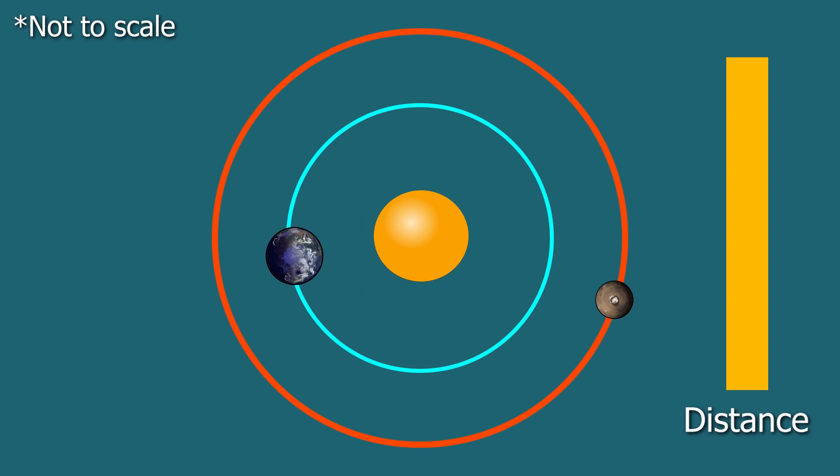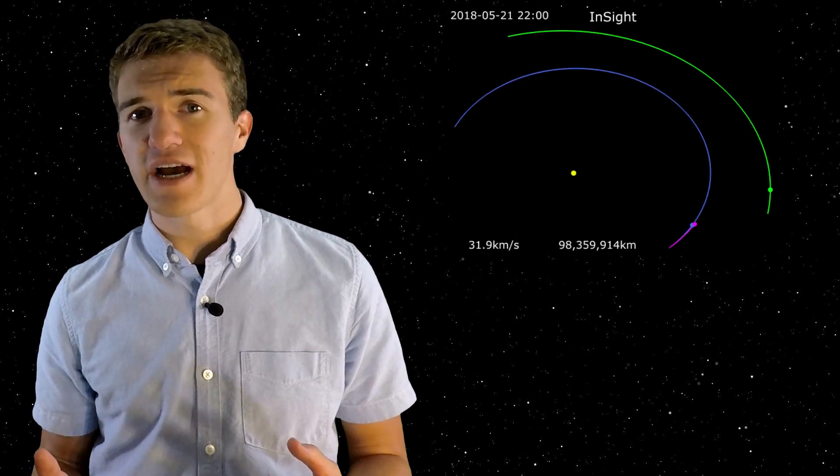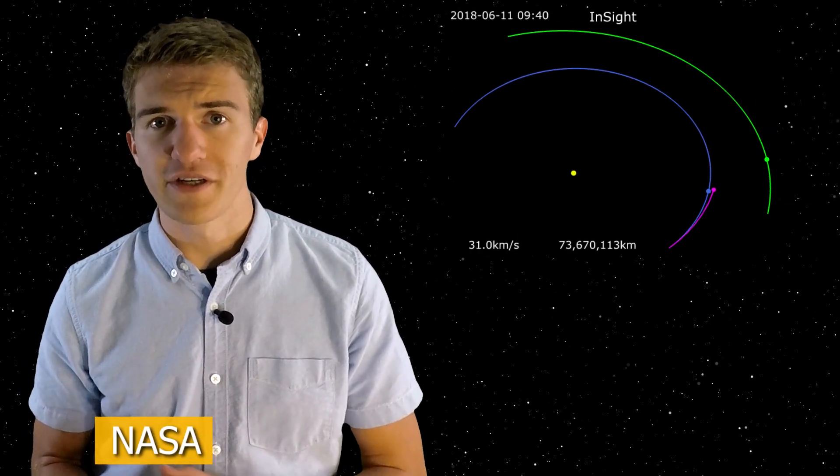But again, I said we don't really want to go in a straight line. So what's the answer? It turns out that there are many different trajectories that can take you from Earth to Mars. And essentially, each one of these trajectories is a part of an orbit that is around the sun. Now, the different trajectories can vary depending on where Earth and Mars are in their corresponding orbits.